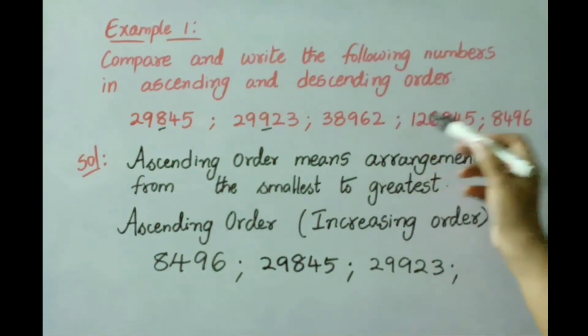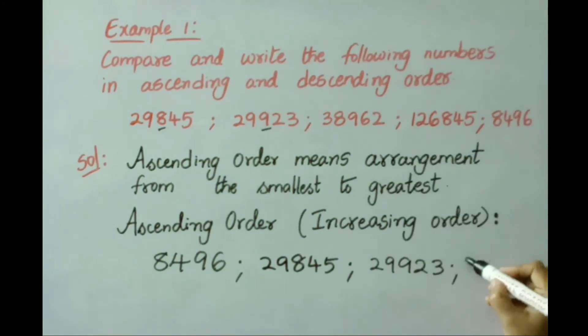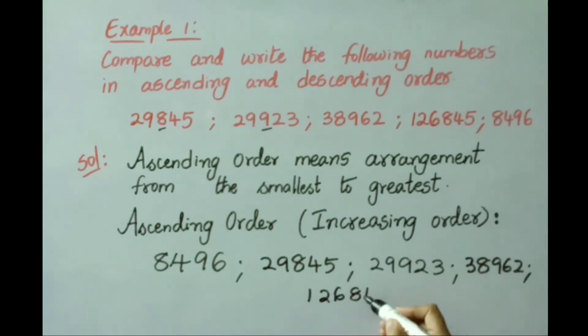Still two numbers left over: 5-digit number and 6-digit number. So 5-digit number is smaller than 6-digit number, so write that number: 38,962. And the last number is 1,26,845. So we arrange the numbers from smallest to greatest.